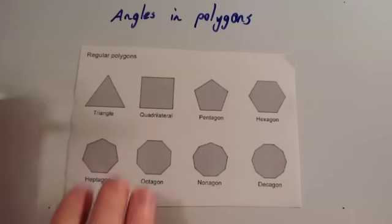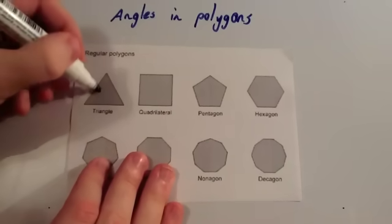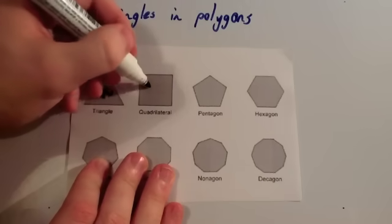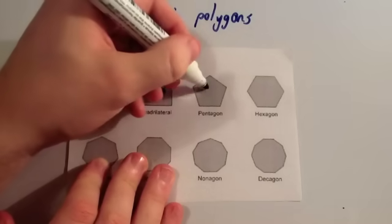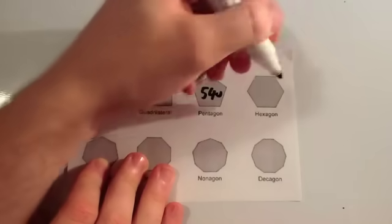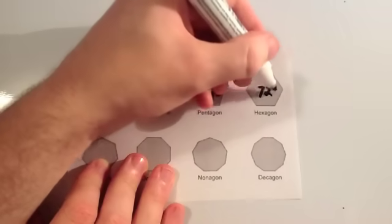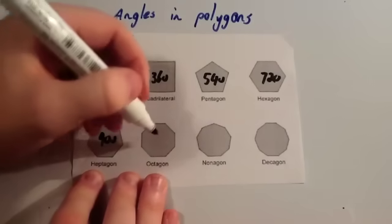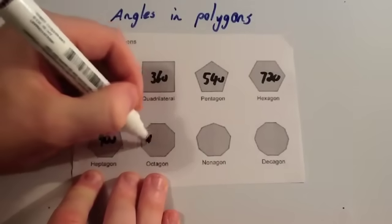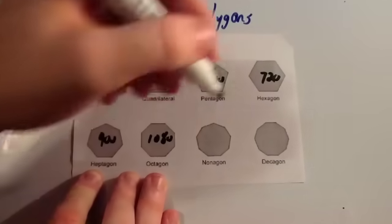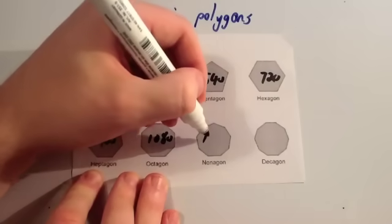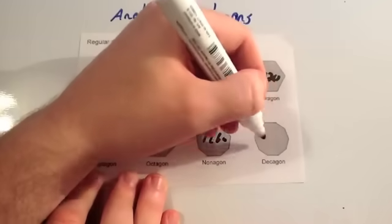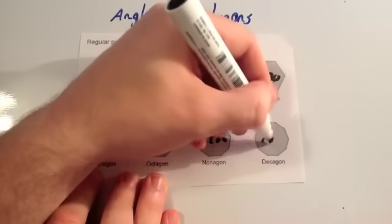The angles add up in each of these shapes as follows. In a triangle, it adds up to 180 degrees. Quadrilateral: 360. Pentagon: 540. Hexagon: 720. Heptagon: 900. Octagon: 1,080. Nonagon: 1,260. And a decagon: 1,440.